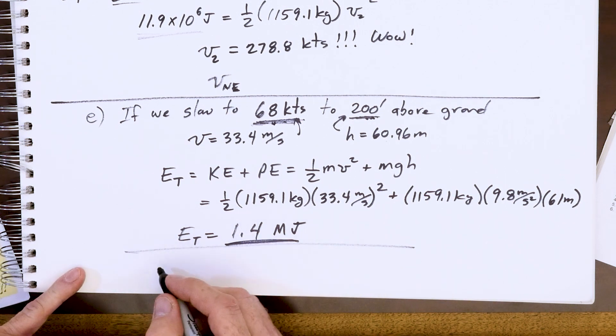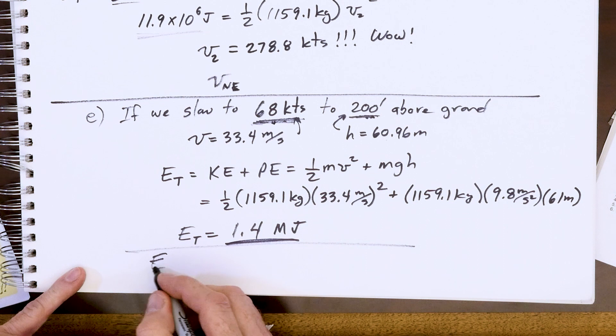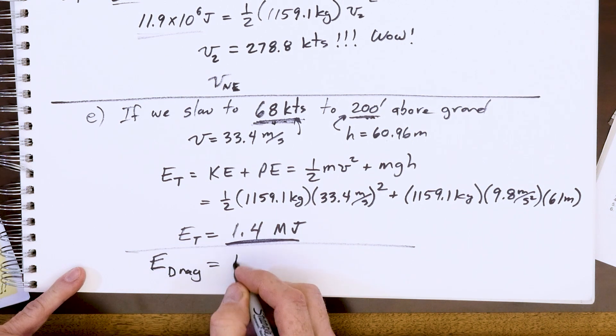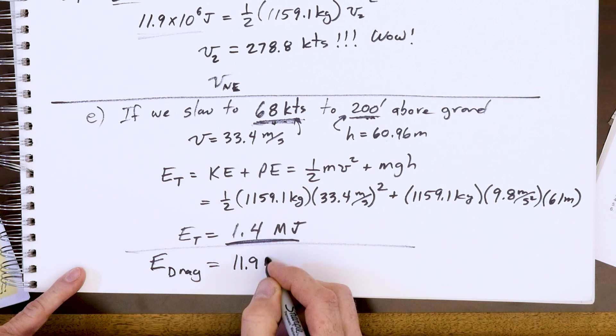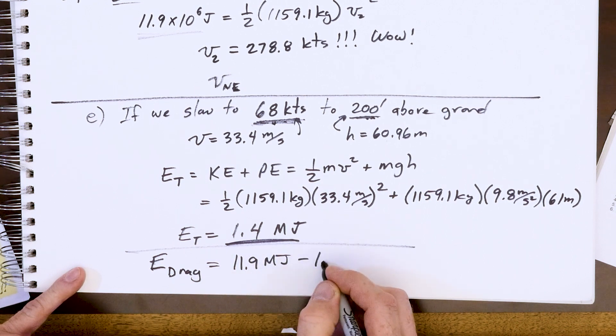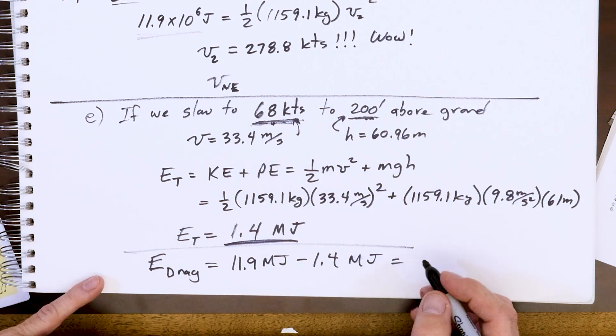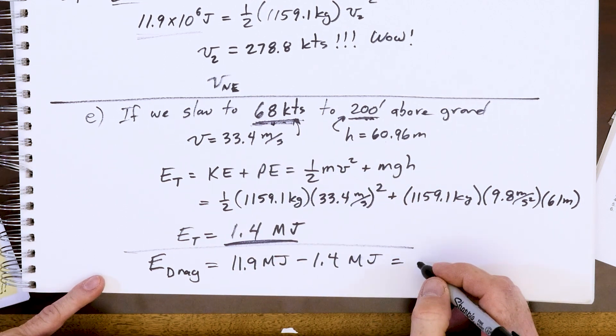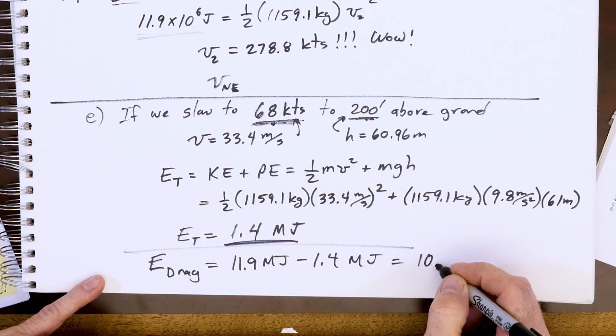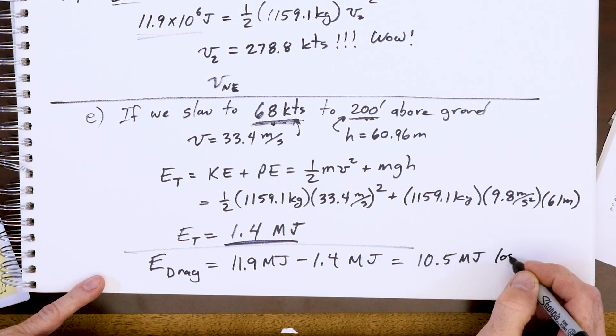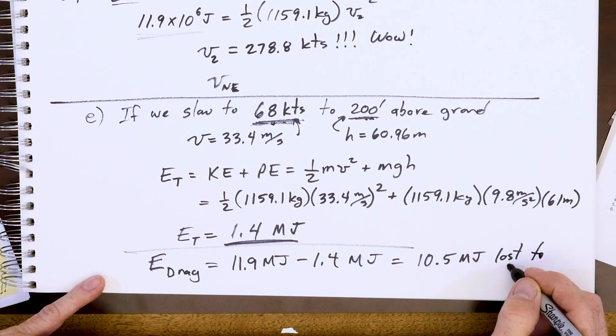That's just the difference in these two. The energy that was dissipated in drag would be the 11.9 megajoules of total energy minus 1.4 megajoules that we now have when we did a good job getting to 68 knots, 200 feet above the ground. And this gives us what? 10.5 megajoules lost to frictional drag.